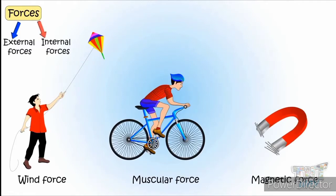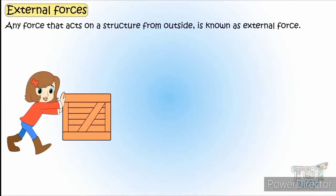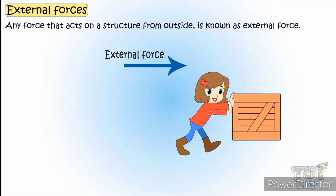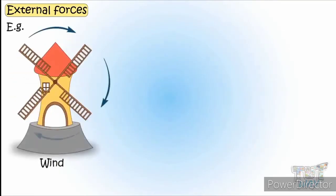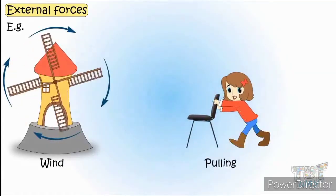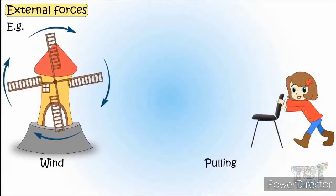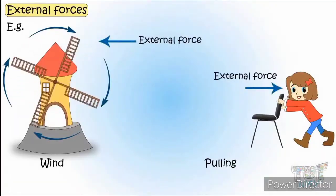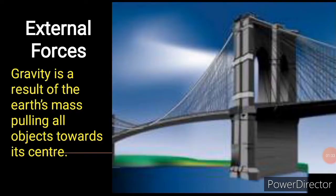All forces that act on structures are divided into two: external forces and internal forces. External forces are forces that act outside the structure — they act against the structure and threaten its integrity. Examples of external forces include wind, precipitation, hailstones, snow, and rain.